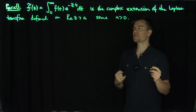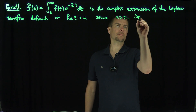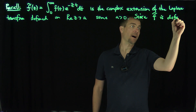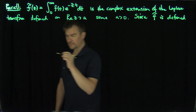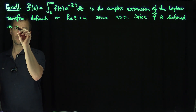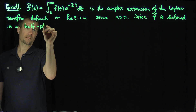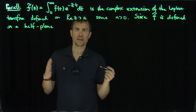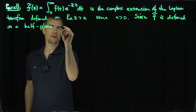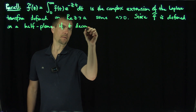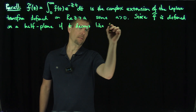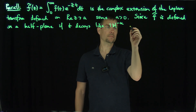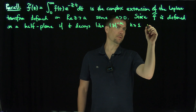Now, what we're going to do is the following. Since f-tilde is defined on a half-plane, if it decays like 1 over z to the k for some k greater than or equal to 1 as z goes to infinity, then we can use our half-plane extension theorem of Cauchy's theorem.